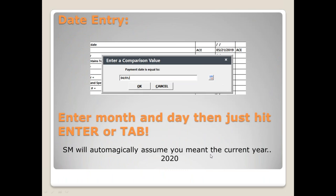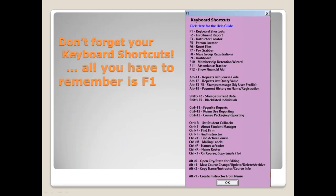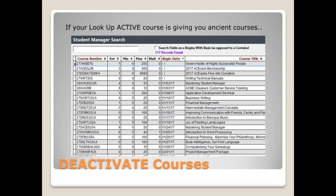For date entry in the current year, you only need to type the month and day and hit Tab — the system automatically assumes the current year, saving you from typing 2020. Keyboard shortcuts: F1 is your shortcut to the shortcuts. There is also a downloadable printout of shortcuts available from the resources section on the AceWare website.